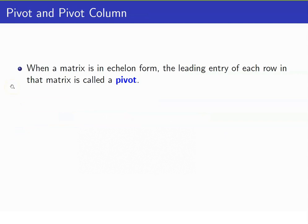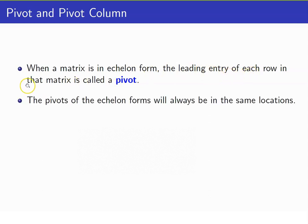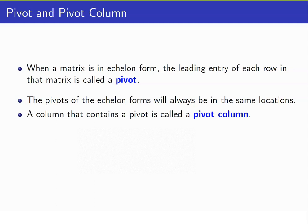Before we proceed with the process, let us first define these few terminologies. First, let's talk about a pivot. When a matrix is in echelon form, the leading entry of each row in that matrix is called a pivot, and take note that the pivots of the echelon forms will always be in the same location. A column that contains a pivot is what you call a pivot column. For example, let us locate the pivots. Take note that pivots are just another term for leading entries. So these are our pivots because those are the leading entries, and therefore this column here is a pivot column, this is another pivot column, and this is the third pivot column.